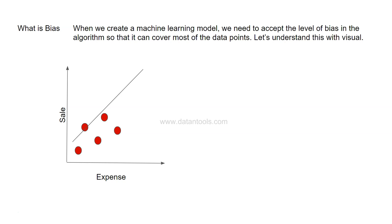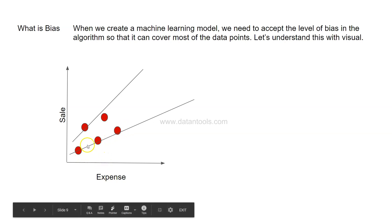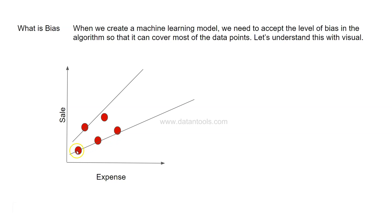If we tune the parameters and create a new model, based on those three data points the new function fits a different line. But even in that case, two data points are very far from that line. We further tune the parameter values and fit the model on the training data, and we find a new line that reduces the distance between the data points. Finally, we say this line truly represents all the data points.